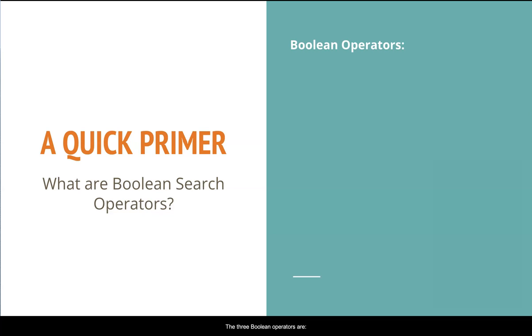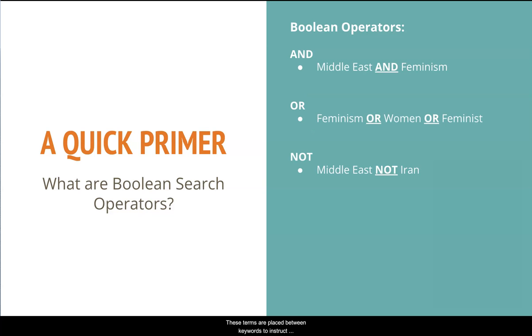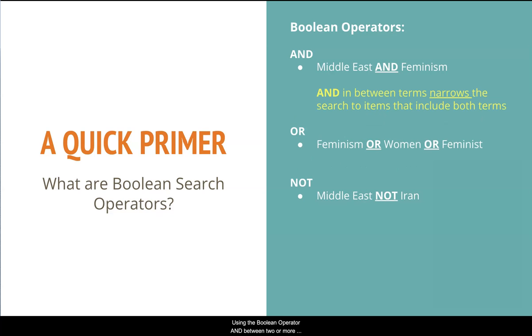The three Boolean operators are AND, OR, and NOT. These terms are placed between keywords to instruct the database on how to handle those keywords.